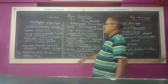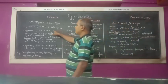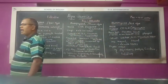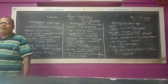In Chlorophyceae, the photosynthetic pigments present are Chlorophyll A and Chlorophyll B.